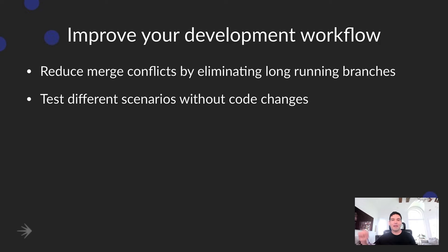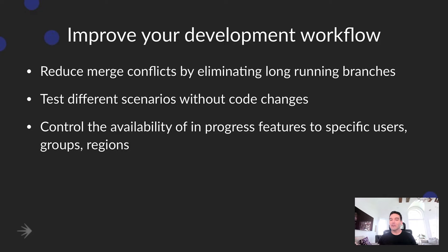I can just flip the flag or flip the variation and see what the effect is going to be. I can control the availability of in-progress features to specific users, groups, and regions — this one is huge. I can basically say this feature that I've been working on, I'm going to only allow our testing team to test that in production, so they're the only ones who see it, or I'm going to roll it out to a beta list of users and they're the only ones who have access to it. You can do all kinds of targeting of feature flags to particular users — it's a really, really powerful thing.